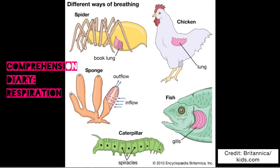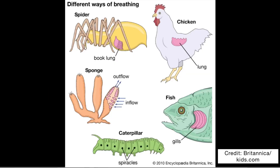Respiration is the process that all living things go through to create the energy they need to live. This happens in the cells, so it is also called cellular respiration. It usually involves exchanging two gases, which are oxygen and carbon dioxide. The cells take in oxygen and release carbon dioxide.